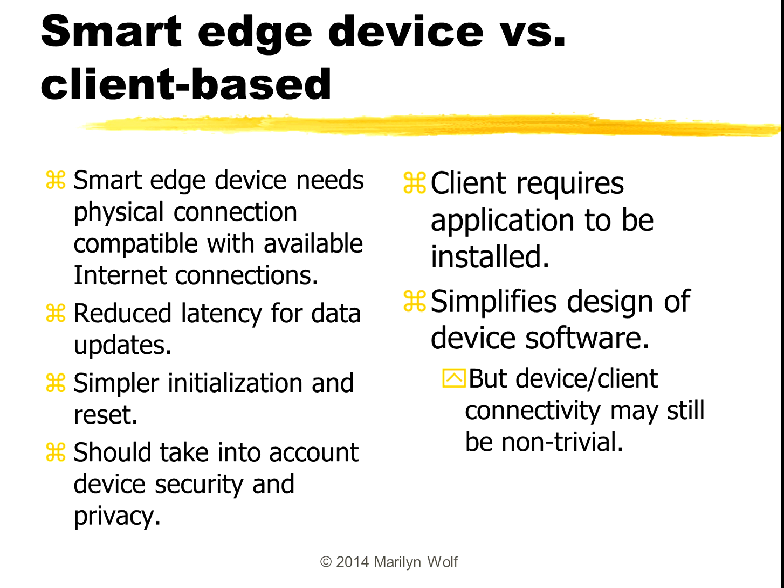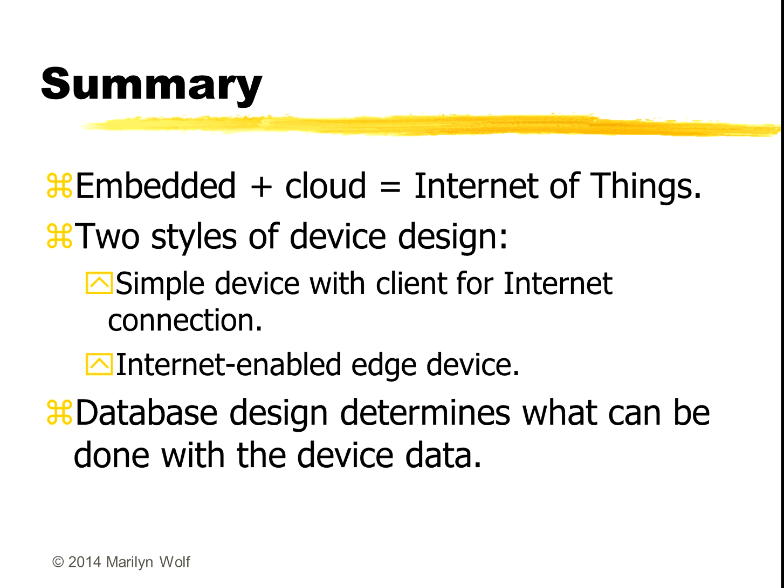With the client-based dumb solution, we need to develop the application, install it, and connect up our embedded device to the client — but it does simplify the software on the device. Talking to a PC over ethernet or USB does take some effort, but it may still be simpler than dealing with a full-fledged internet connection. In summary: embedded plus cloud equals Internet of Things. We have two types of device approaches — a simpler device with a client that mediates between the device and the cloud, or a directly internet-enabled edge device. On the cloud side, database design is a very important aspect because it determines what can be done with the data we get from our edge devices.